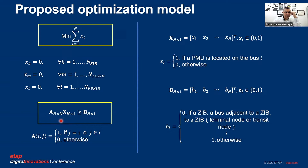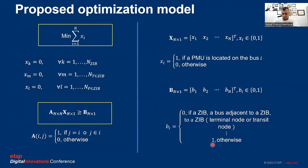The next equation is A·X ≥ B. A is the connectivity matrix of the system — in this case the IEEE 14-bus system. X is the PMU placement vector. B is a vector where the value is zero if a bus is adjacent to a ZIB terminal or transit node, and one otherwise.